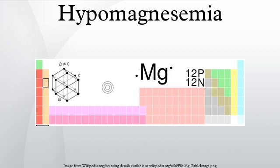The prefix hypo means under. The root mag refers to magnesium. The suffix of the word, emia, means in the blood.